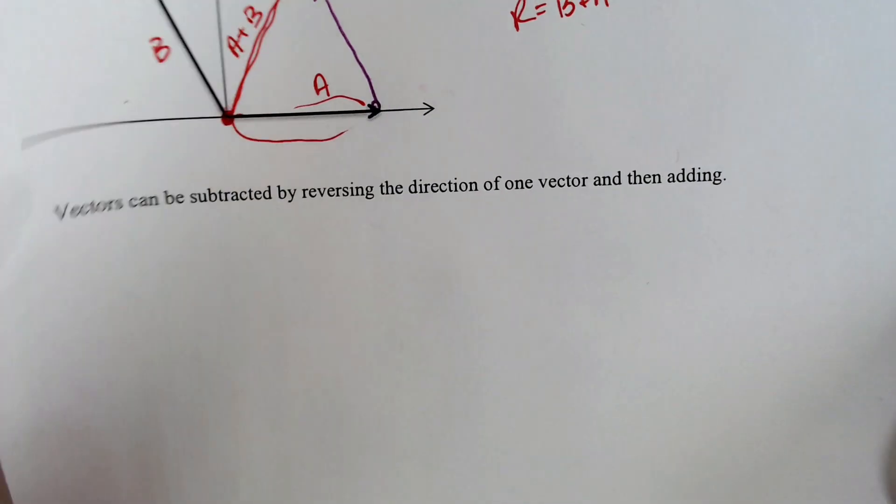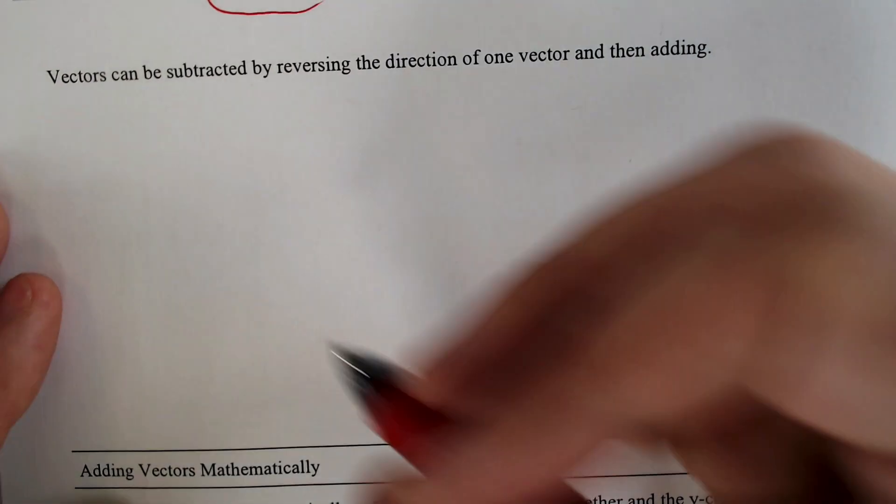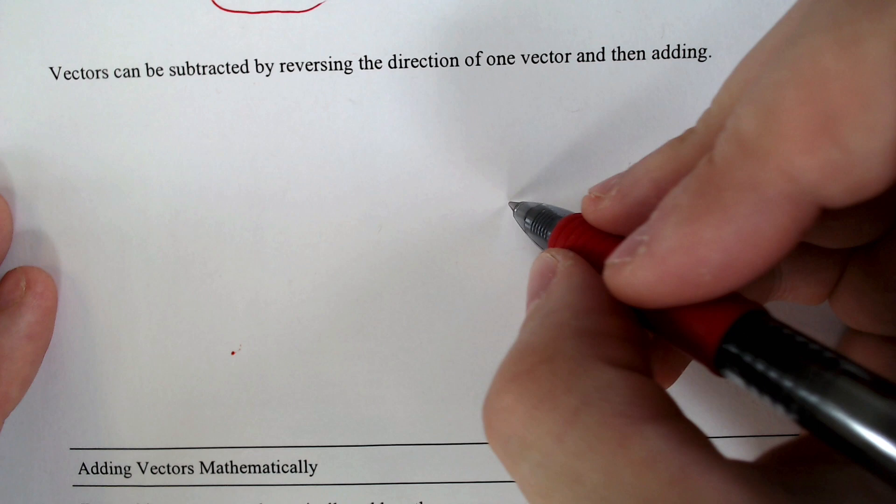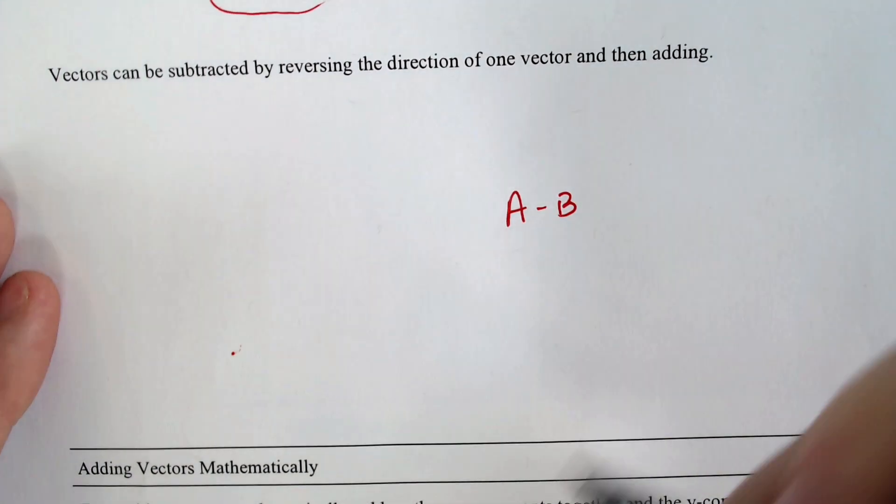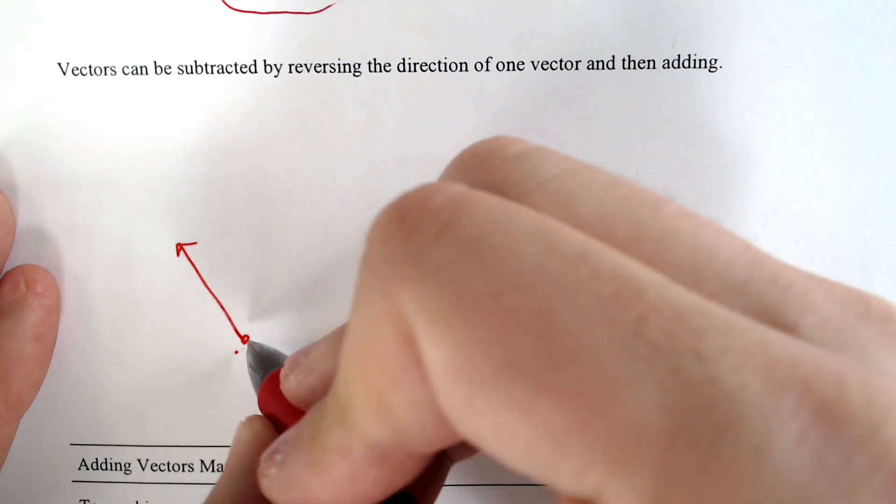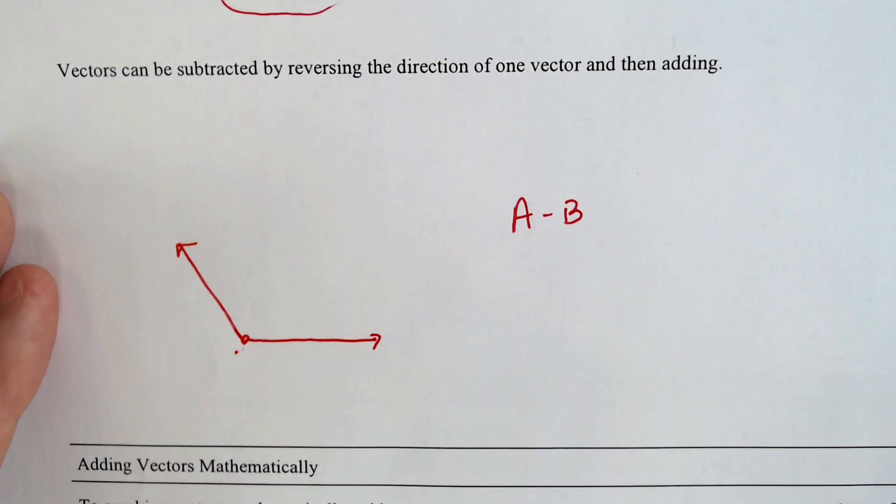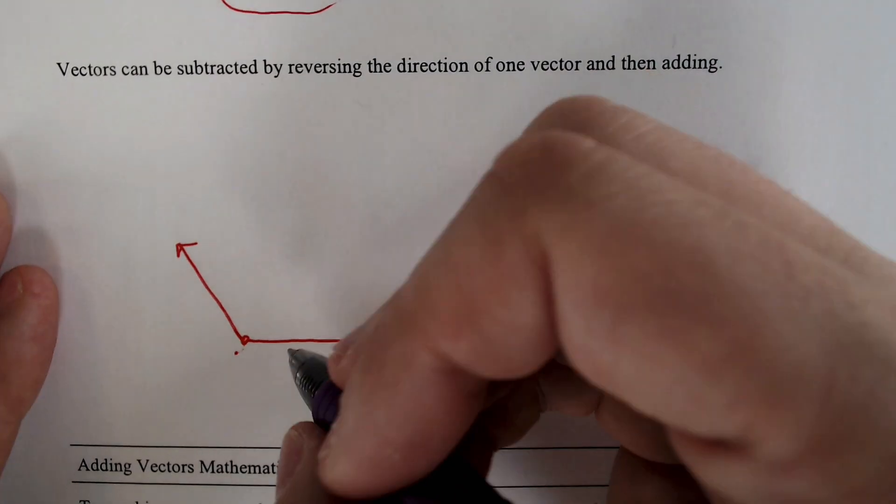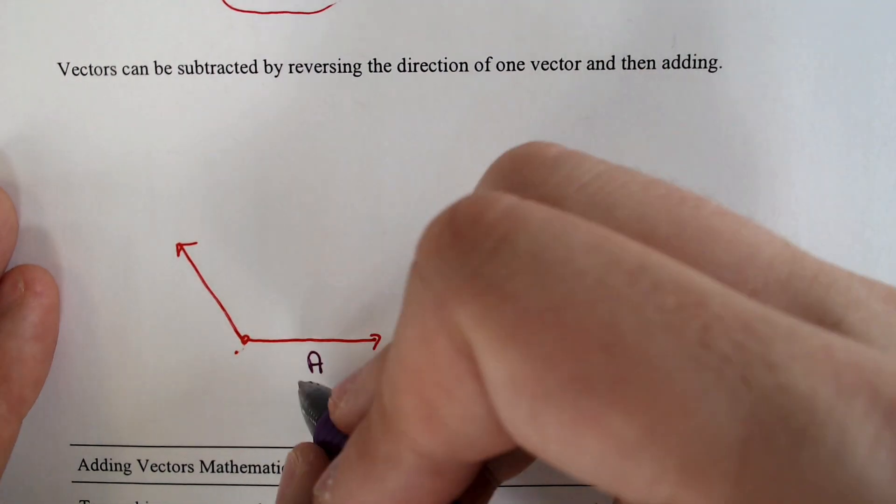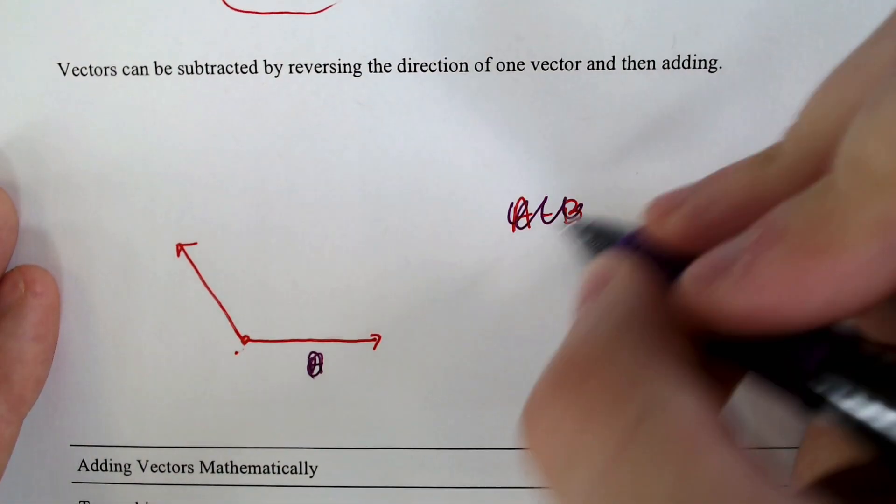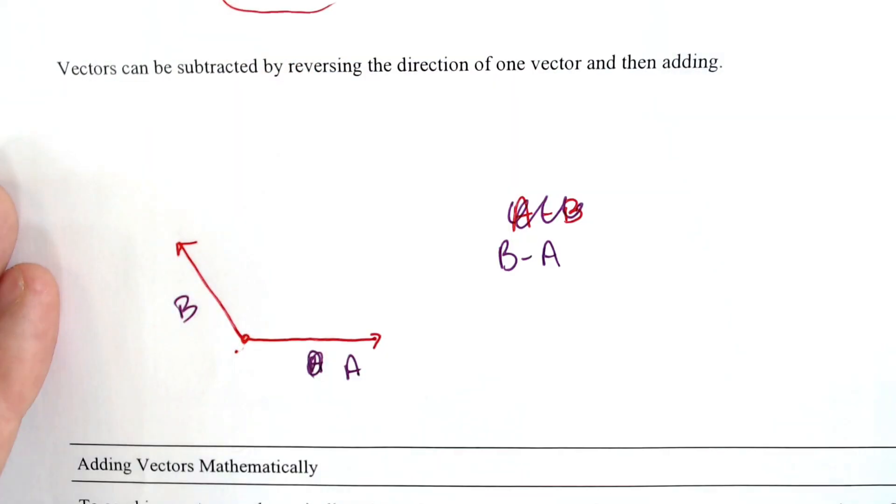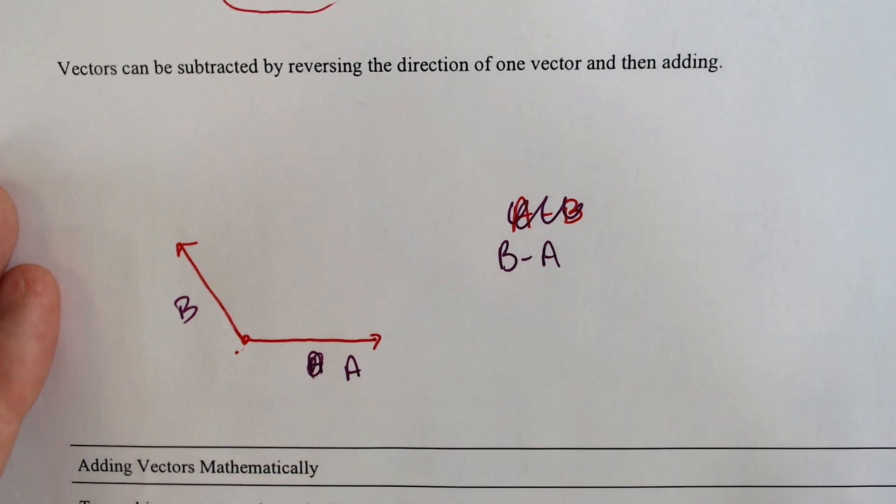Subtracting vectors, I think, is more interesting. For instance, if we take the same example, if we wanted to do A minus B, remember that B was over here and A was over here. So if we did A minus B, oh, let's do B minus A. Let's do B minus A. It's easier to subtract a horizontal one.